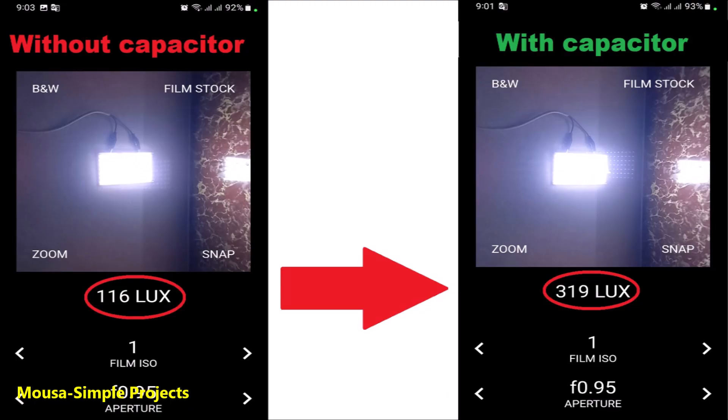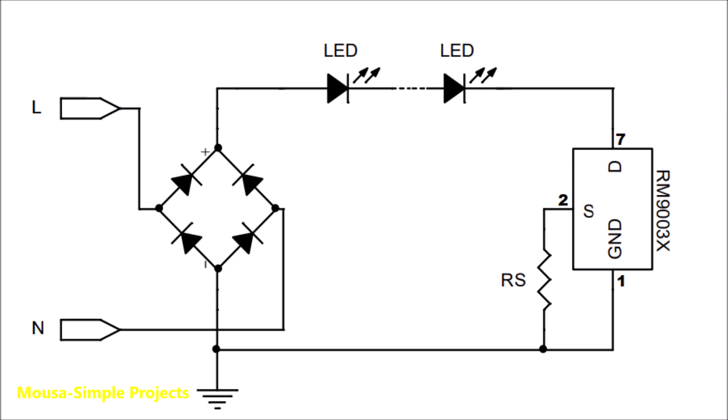I measured the light intensity by using the camera sensor before and after adding the capacitor. The light intensity increases almost 3 times after adding the capacitor. I don't know why the circuit in the datasheet has no capacitor.